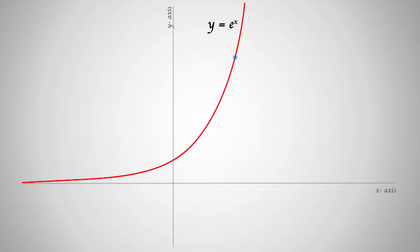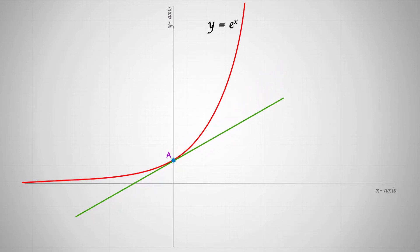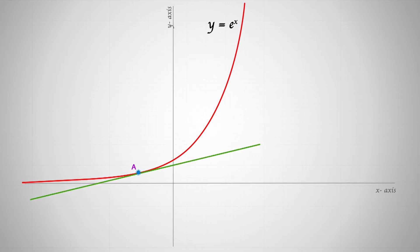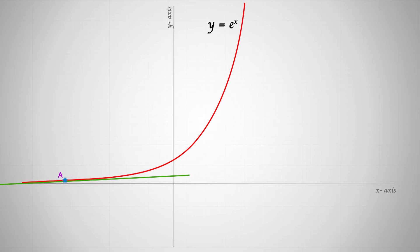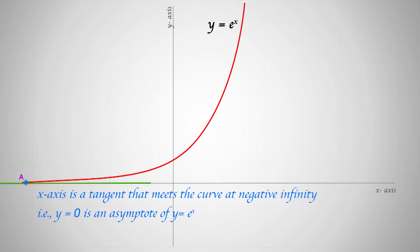For example, consider the function y = eˣ. We consider a point A on the graph and a line tangent to the curve at A. Since the choice of point A is arbitrary, we can draw tangents at each point on the curve. As we move the point away from the origin in the negative direction — letting x approach negative infinity — the tangent lines come closer and closer to the x-axis. Thus the x-axis is a tangent that meets the curve at negative infinity. That is, y = 0 is an asymptote to y = eˣ; specifically, it is a horizontal asymptote.